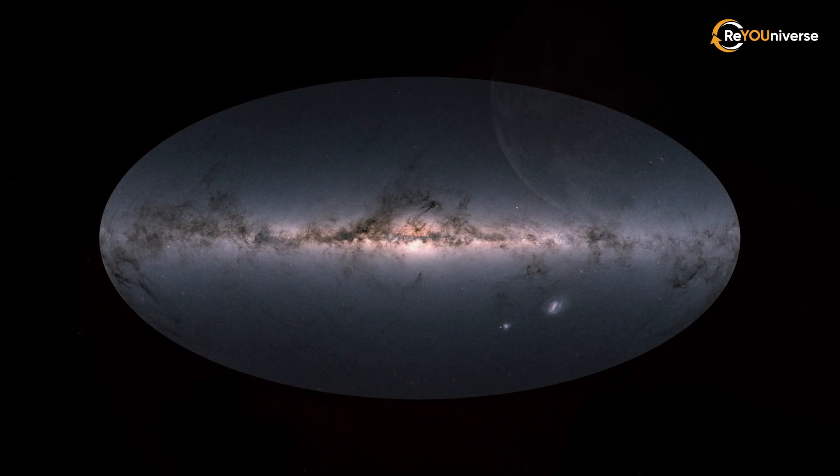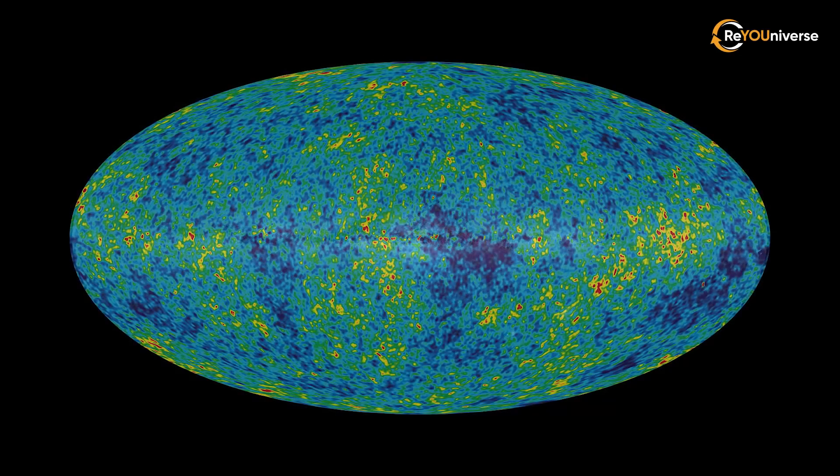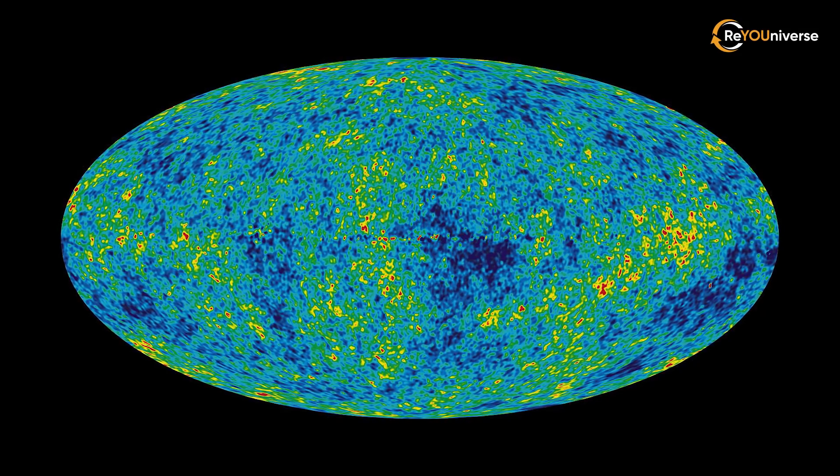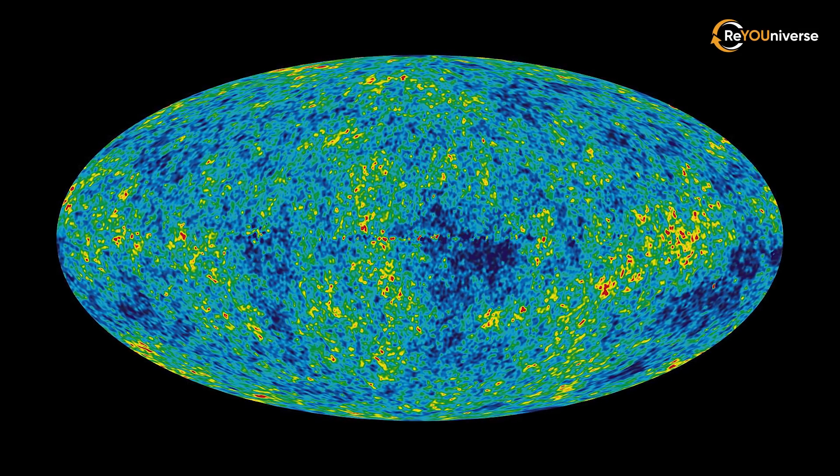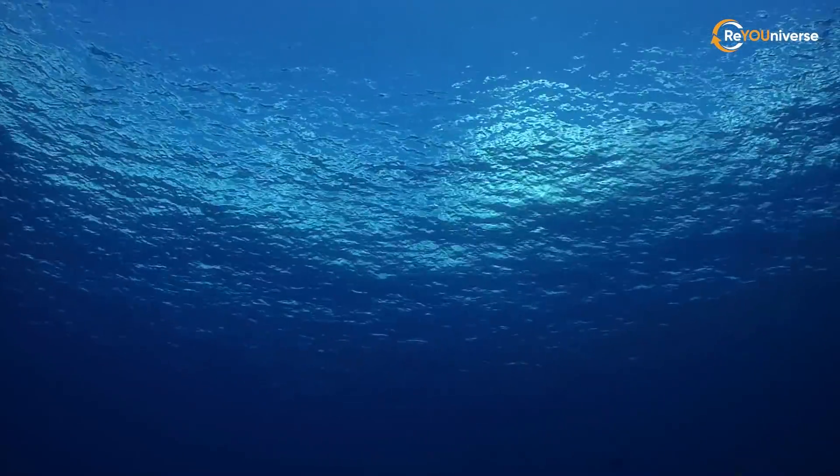So if you color-code the temperature of the cosmic microwave background radiation on the map of the starry sky, the coldest areas marked with blue, and the hottest areas marked with red, it will look like a patchwork quilt, or light ripples on the surface of the water.